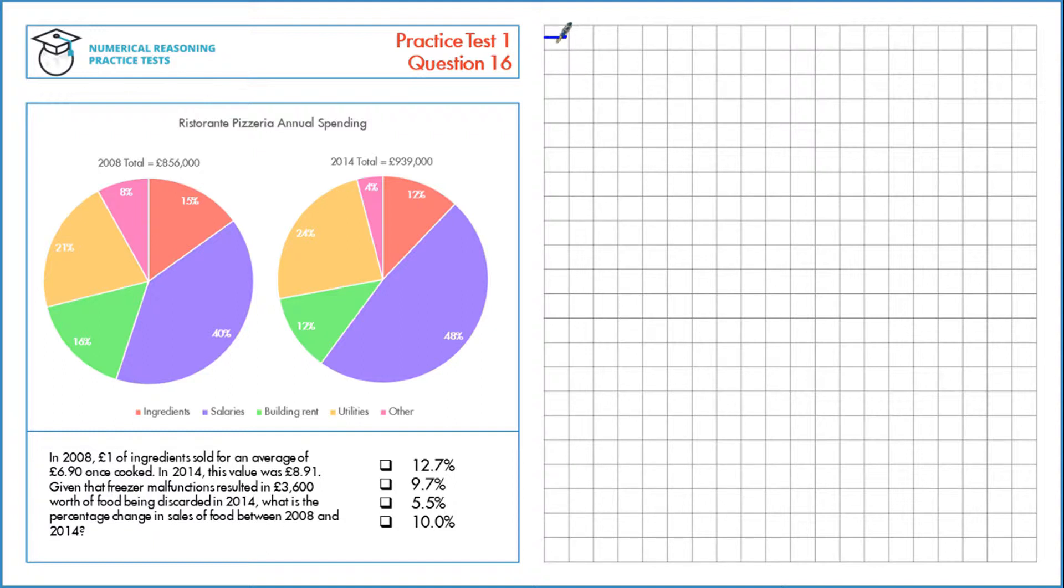Let's figure out the money spent on ingredients first for 2008 and 2014. In 2008, ingredients is this one here, so that's 15% of the total, which is 0.15 times £856,000. That's a total of £128,400.